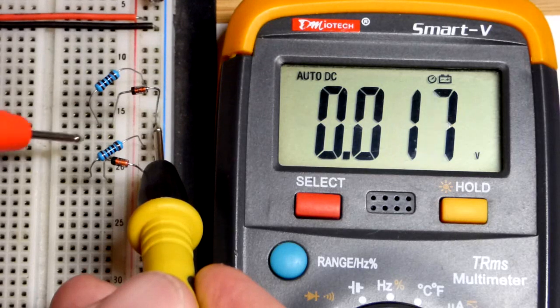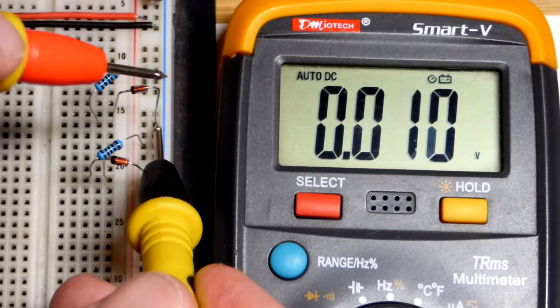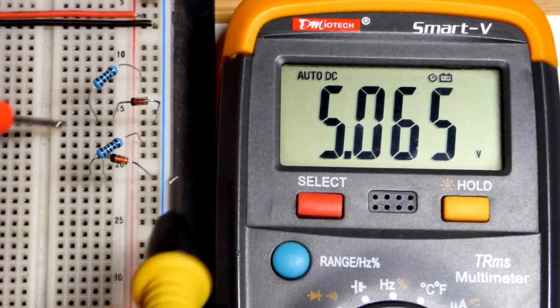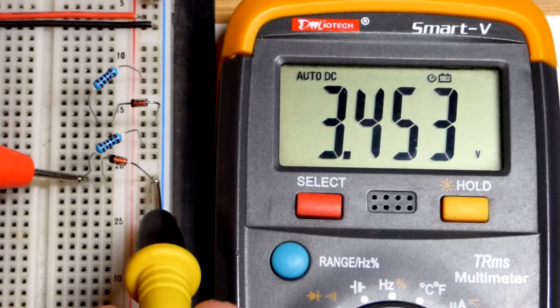So you can fine tune it a little bit with how much current is flowing through it. But for the most part, it's really close to its Zener voltage.